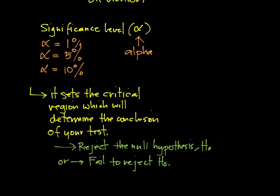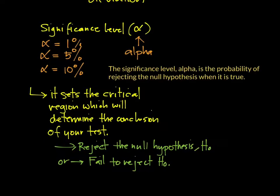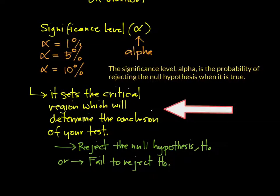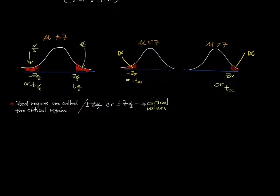For the significance level, this is what we call alpha. Its technical definition is that it is the probability of rejecting the null hypothesis when it is true. In hypothesis testing, it sets the critical region which will determine the conclusion of our test — that is, whether to reject the null hypothesis H0 or fail to reject H0. Take note that alpha is the size of the critical region, shown in red in the diagrams.